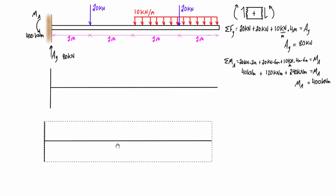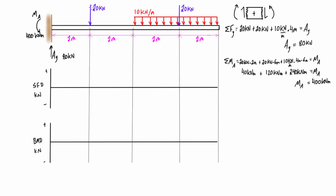Now we can set up our shear force diagram and bending moment diagram with grid lines for every notable point — a point load or the start, stop, or change in a distributed load. For the shear force diagram, we draw our free body diagram starting at the left-hand side moving to the right, taking our first virtual cut just to the right of the reaction. We have 80 kilonewtons pressing up, and then we have our internal shear force. We just need the sum of forces in the y direction to get the shear.